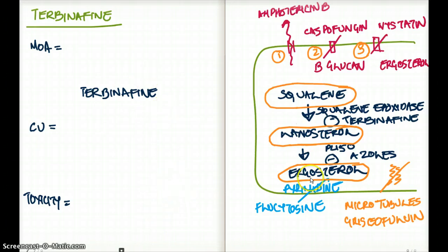Moving on through our flowchart: lanosterol is converted to ergosterol, and that is achieved by P450. This mechanism is inhibited by the drugs called azoles. Azoles are very good drugs for systemic mycosis — for example, cryptococcal meningitis, blastomyces, coccidioides, or histoplasmosis. All of those are treated with azoles, in general for systemic mycosis.